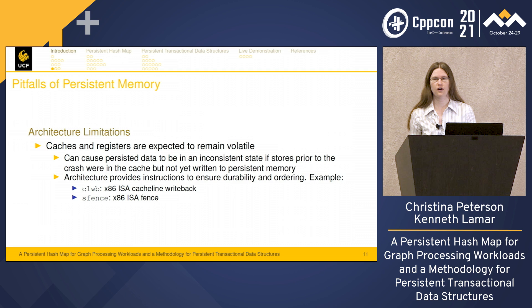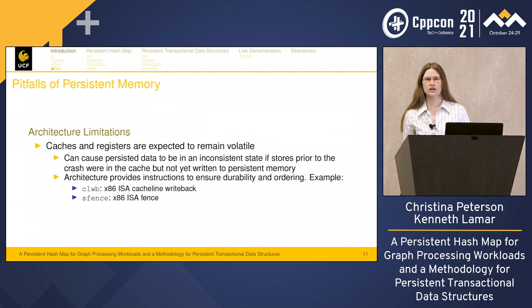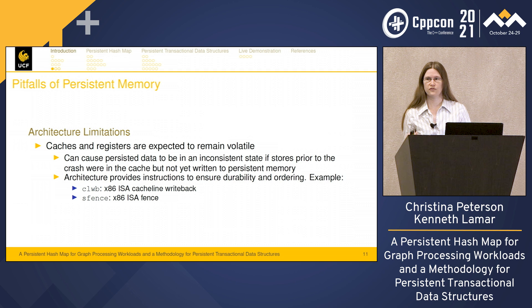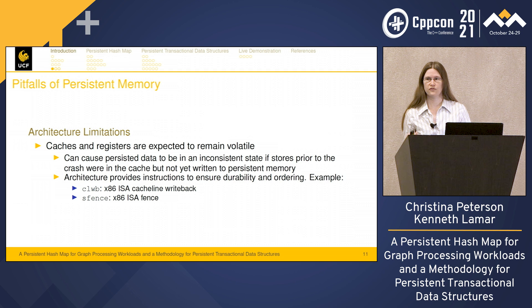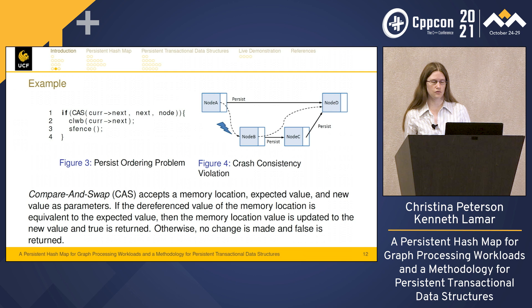But with all these positives, there are also pitfalls — in particular, architectural limitations. The caches and registers are expected to remain volatile, so persistent data can be in an inconsistent state if stores prior to a crash were in the cache but not yet written to persistent memory. The X86 ISA provides instructions like cache line writeback for durability and S-Fence for ordering guarantees. But even using these is problematic. For example, consider compare-and-swap — an atomic instruction that accepts a memory location, an expected value, and a new value; if the dereferenced value equals the expected, the location is updated and true is returned, otherwise no change and false is returned.